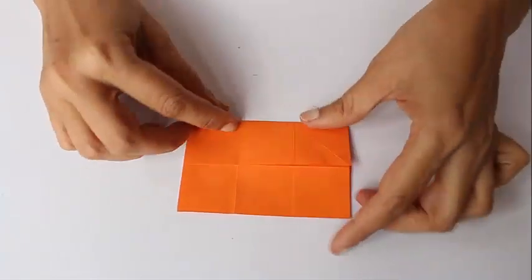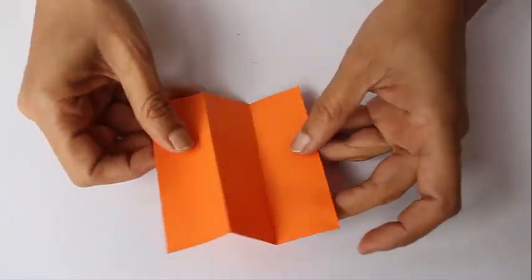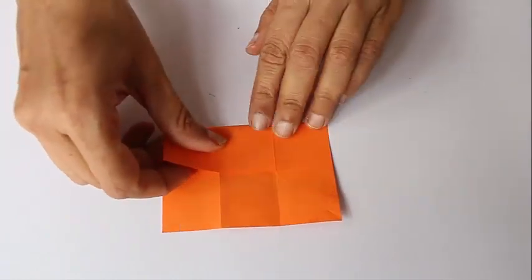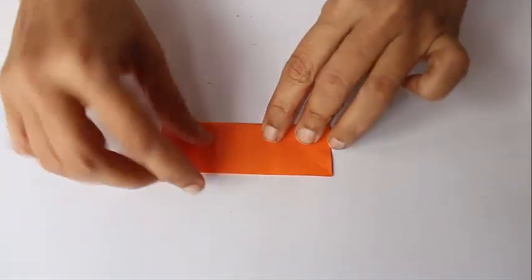To make this, you just need a square piece of paper. First, divide it into three parts along the length, and again into three equal parts along the breadth.